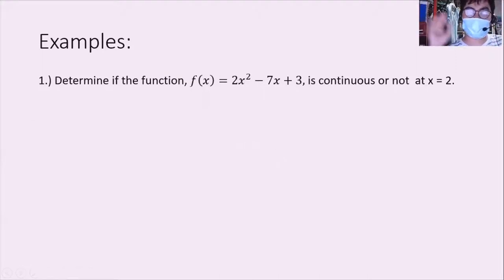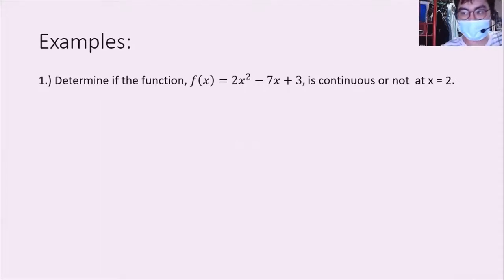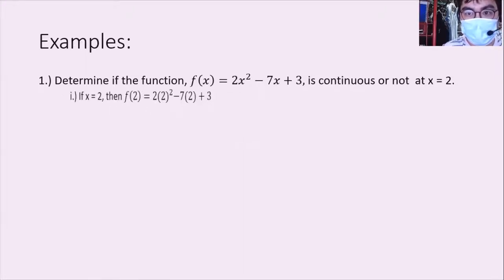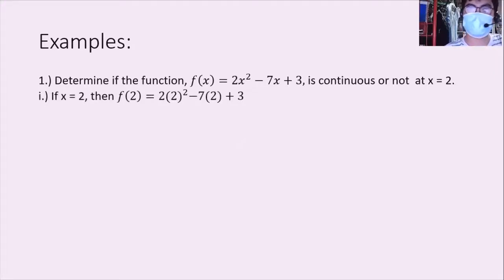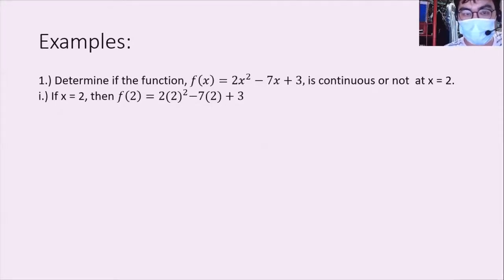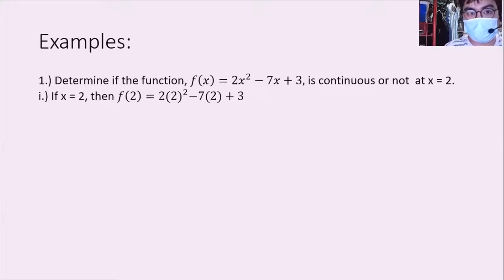Now we're going to discuss examples. Determine if the function f(x) = 2x² - 7x + 3 is continuous or not at x = 2. First, we're going to determine if f(c) exists. If x = 2, we substitute 2 for x. So f(2) = 2(2²) - 7(2) + 3. We simplify using the PEMDAS rule: 2 squared is 4, so 2 times 4 = 8, minus 14, plus 3 equals negative 3.